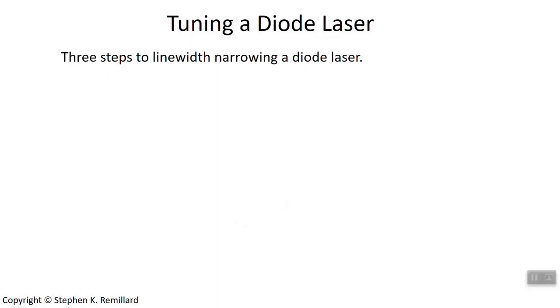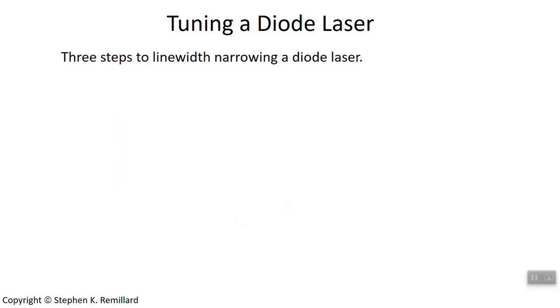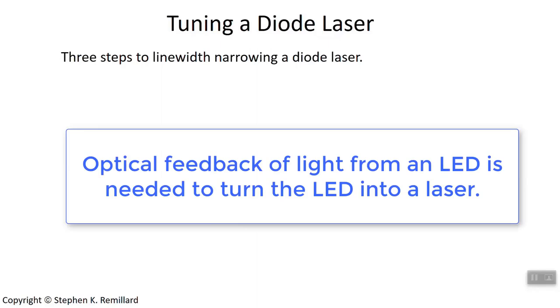In order to have a laser, it's really not enough just to have an LED, just to have a junction that can convert electron-hole pairs into photons. That's an LED, but that's not a laser. However, a diode laser is made from an LED. The job is done by the optics outside of the LED.